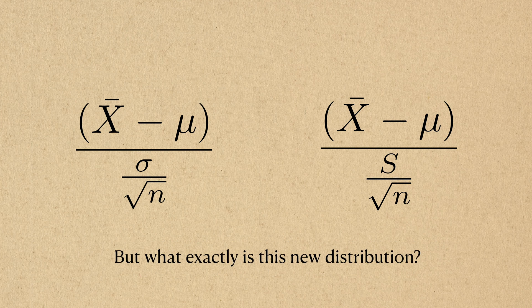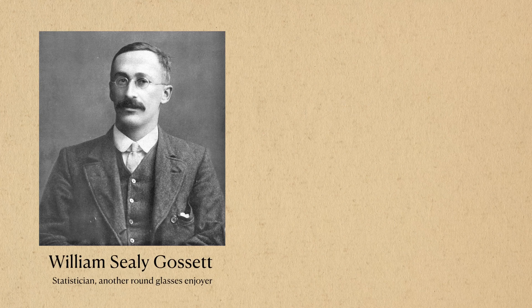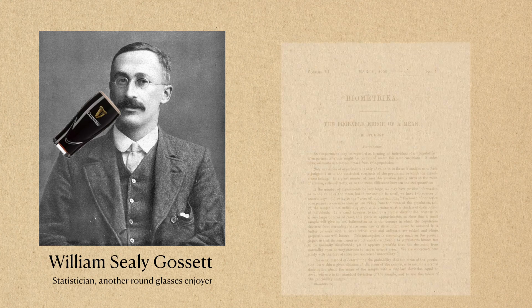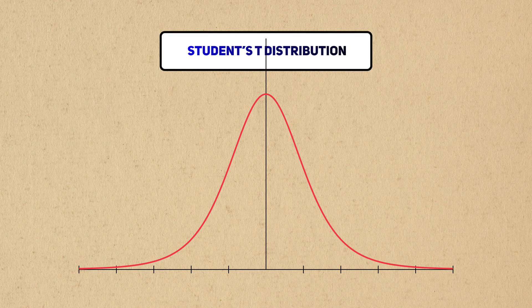That's cool and all, but it still doesn't tell us what the distribution of this function is. Thanks to the work of William Gossett and his work at Guinness, we have a name for this distribution: the student's t distribution, or just the t distribution.